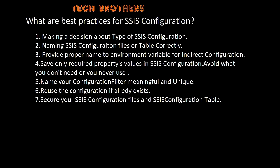The fourth best practice is to save only required property values in the SSIS configuration — avoid saving what you do not need. When you save configuration for a connection manager, it saves tens of different properties: scope, description, name, server name, and others. You only need server name and database name. Instead of saving eight extra records, just save the connection string. For variables, only save the value — that's the only thing you need.